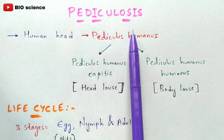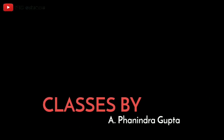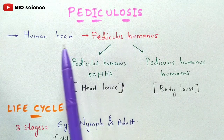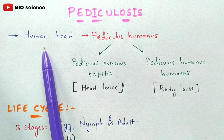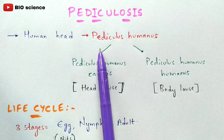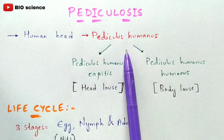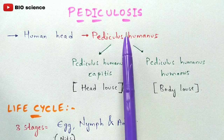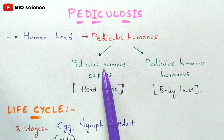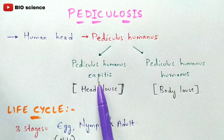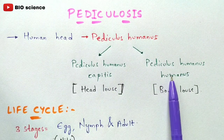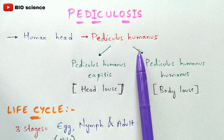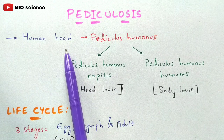In this video we are going to discuss about pediculosis. It is a disease which is mainly caused in the region of the head in human beings, and it is mainly caused by an ectoparasite called Pediculus humanus. There are two subspecies of Pediculus humanus which cause the disease called pediculosis: Pediculus humanus capitis and Pediculus humanus humanus.